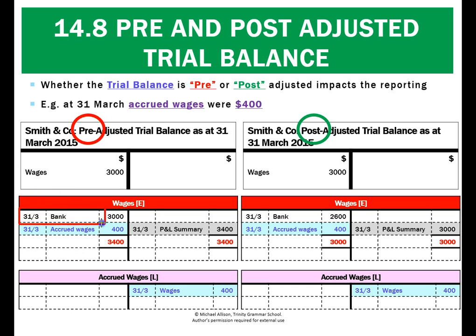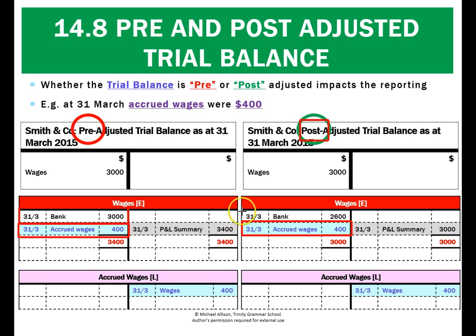In the pre-adjusted trial balance, the $3,000 must have referred to what was already paid. We then added in the accrued expense amount for a total of $3,400. Over here, though, we add in the $400 adjustment because the adjustment was post-adjusted — it's already done. What that must mean is that the bank amount, the amount already paid, was $2,600, and together they totaled $3,000. So there's a slight adjustment where you can see that one word completely changes the amounts we need to record.